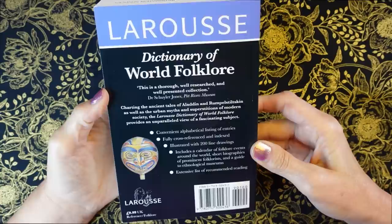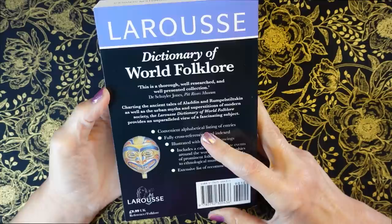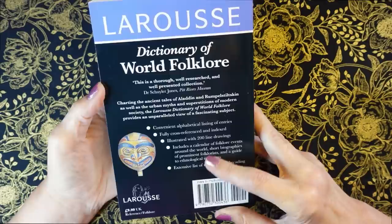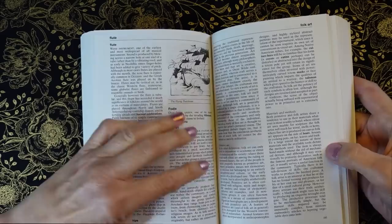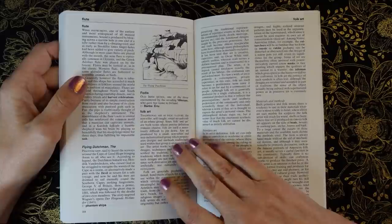And I thought we would take just a little browse through. It charts the ancient tales of Aladdin and Rumpelstiltskin, as well as the urban myths and superstitions of modern society. The LaRousse Dictionary of World Folklore provides an unparalleled view of a fascinating subject. I am just literally going to browse through randomly and pick out things that I might find interesting.